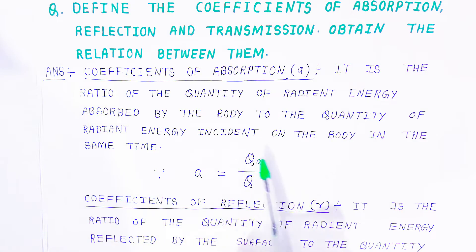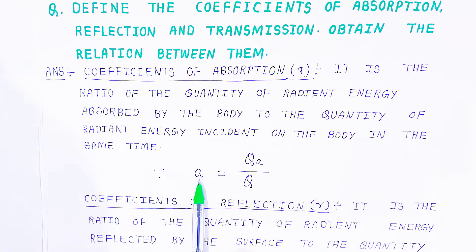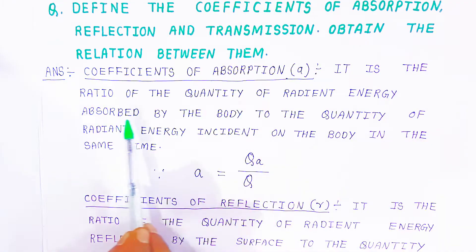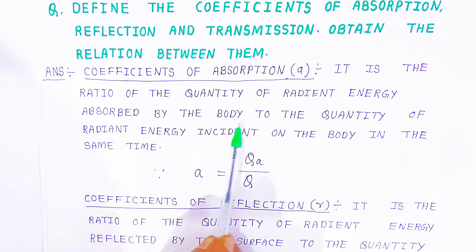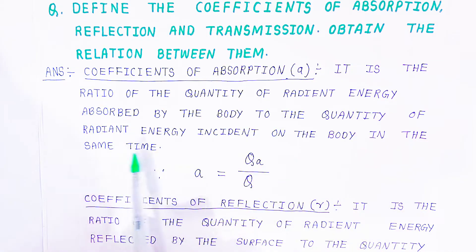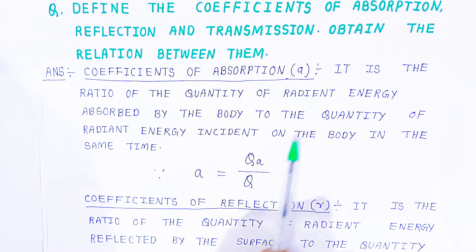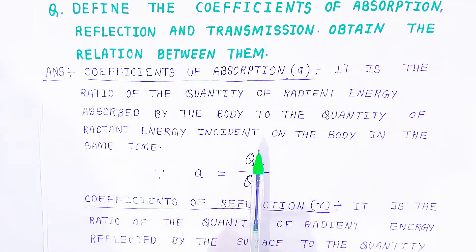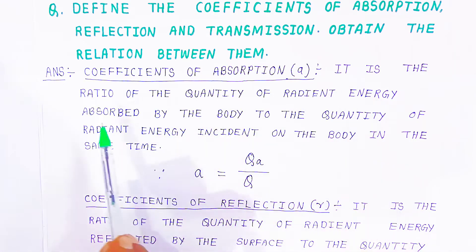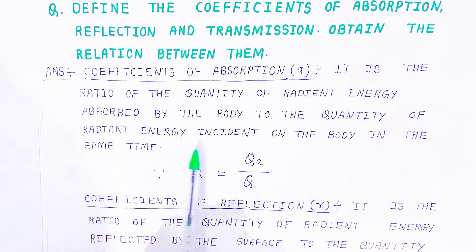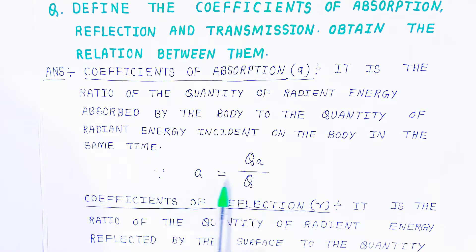So the coefficient of absorption A is defined as the ratio of the quantity of radiant energy absorbed by the body to the quantity of radiant energy incident on the body in the same time. That is, A equals QA upon Q.